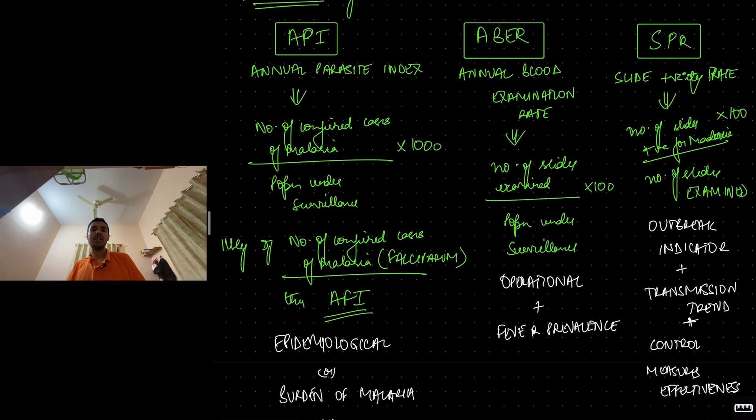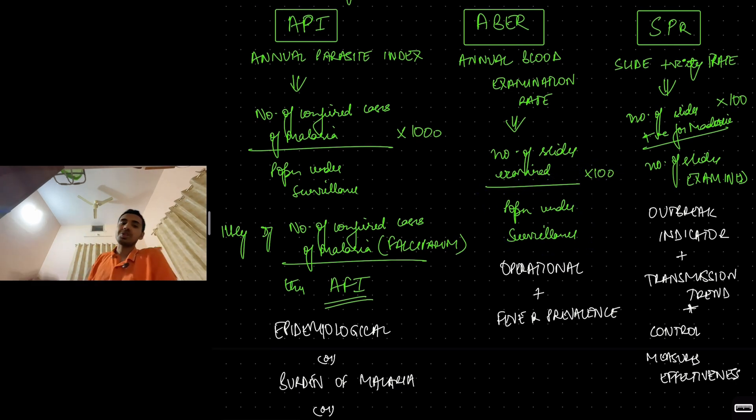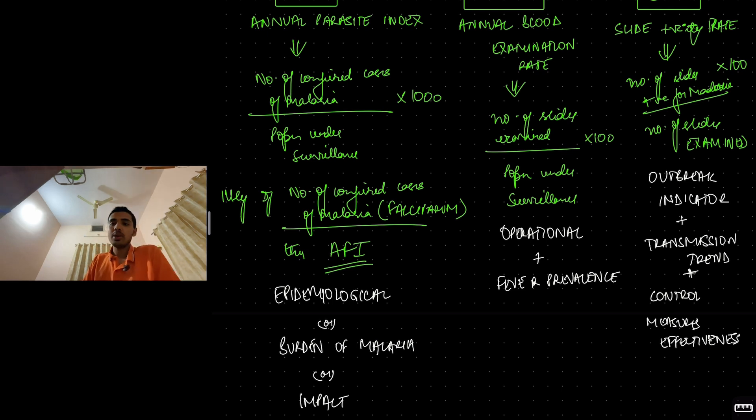Coming to annual blood examination rate, ABER. Basically, the number of slides examined divided by population under surveillance into 100. There is a given population. Multipurpose worker is going and whoever has fever, he or she is taking the blood forming smears and examine it at a microscope. Like that, how many slides are being examined in the given population? It tells us the operational indicator. Why? If the program is working, if it is functioning, if it is operating, then more slides will be examined because every fever case is being detected. It also tells us the fever prevalence in the community because more the fever, more the number of slides examined because of active and passive case detection.